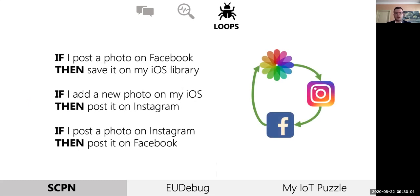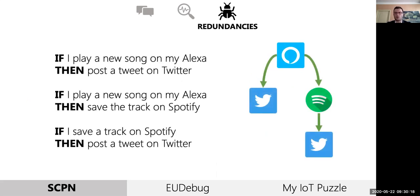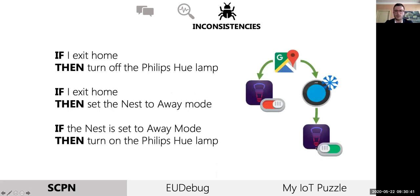Loops arise when a set of if-then rules are continuously activated without reaching a stable state — the three rules reported in the slide are an example, repeated indefinitely, continuously posting a photo in three different places. Redundancies arise when two or more rules are activated at the same time and they reproduce similar functionality — for example, a very similar tweet is posted at the same time because the first two rules share the same trigger, while the second rule implicitly activates the third one. Finally, inconsistencies arise when rules activated at the same time try to execute contradictory actions — when leaving home, the lamp is turned off and the thermostat is set to away mode, but the third rule is also activated and the lamp is turned on, sending two contradictory commands simultaneously.